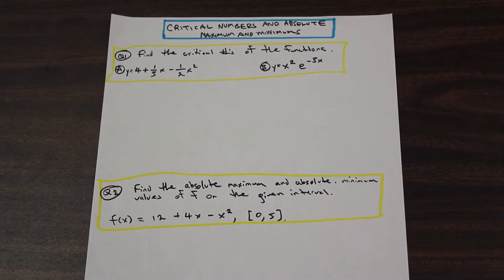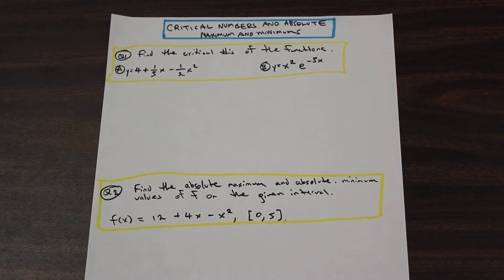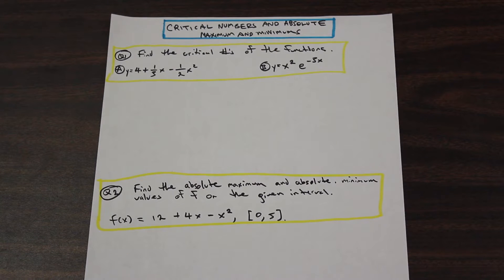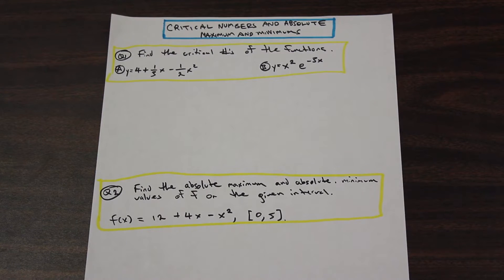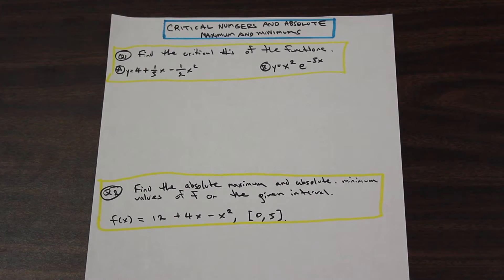A critical number is an extreme number within an extreme portion of a function — so it may be the max, it might be the minimum, the very highest, the very lowest, etc. If we take the derivative and equal it to zero and solve for x, that's going to be one of our critical numbers. Also, where the derivative doesn't exist is also going to be a critical number.